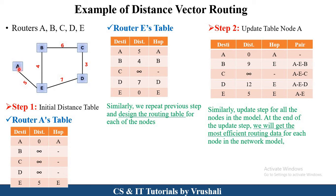This routing table A sends to E. Router E generates a routing table based on its neighbor node distances: E to A is 5, E to B is 4, E to C is infinity (no direct path), E to D is 7, and E to E is 0. This table indicates the distance between neighbor nodes — A goes to E, and E goes to B as well as D. You have to repeat these steps and design the routing table of each node in the network.